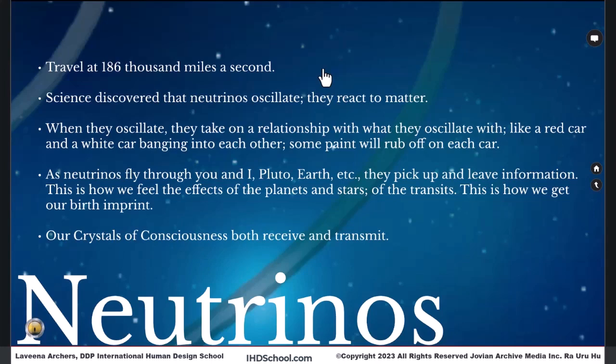So as the neutrinos fly through you and I, Pluto, Earth, all the other planets, they pick up and they leave information. This is how we feel the effects of the planets and the stars, of the transits. This is how we get our natal imprint.